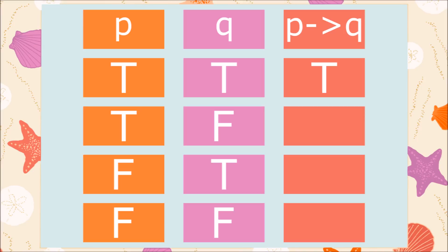Now we can begin to fill in the column: if P, then Q. If P is true and Q is true, then if P then Q is also true — this is the same as in our beach trip example. Now if P is true and Q is false, then the promise is broken, the conditional statement is false, just like in our example earlier. Now we look at what happens if P is false and Q is true: the conditional statement is true, just like when it was rainy in our example with the beach trip. Lastly, we look at what happens if P and Q are both false. Just like in our example earlier, if both P and Q are false, the conditional statement is true.